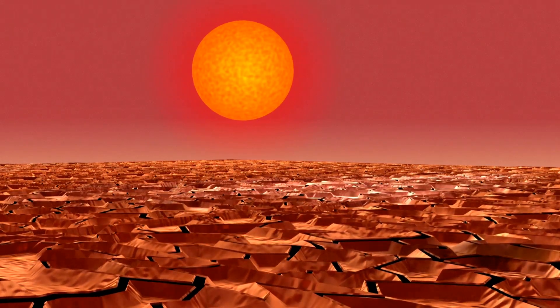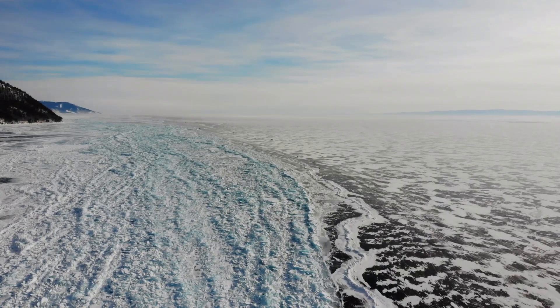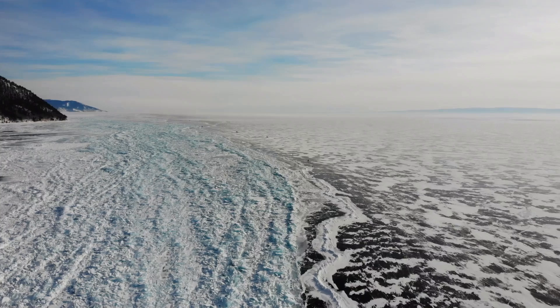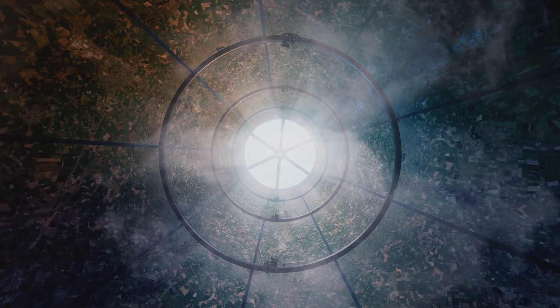The sun-facing side would turn into an uninhabitable desert, with temperatures soaring above 100 degrees Celsius. Meanwhile, the dark side would become a frozen wasteland, with temperatures plummeting far below freezing. Survival in such conditions would be nearly impossible without advanced technology and infrastructure.